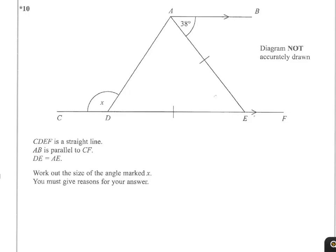CDEF is a straight line. AB is parallel to—not to AE, sorry—to CF. And DE equals AE. So we have these given facts to work with.